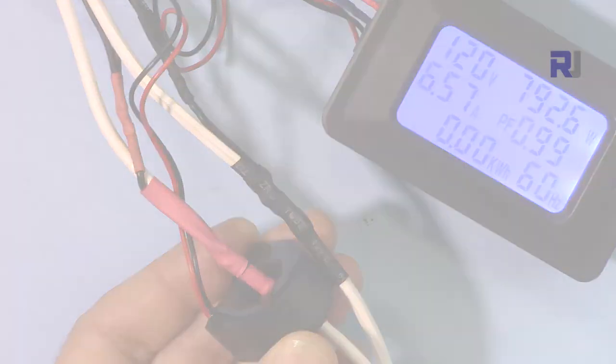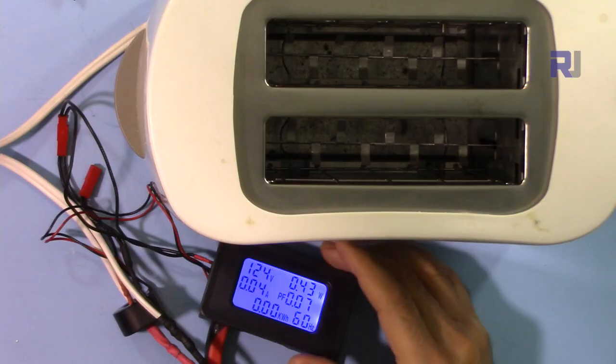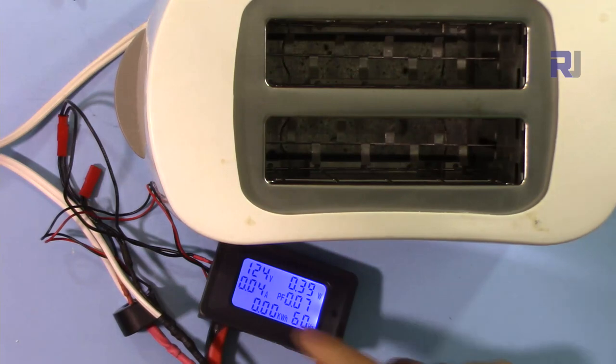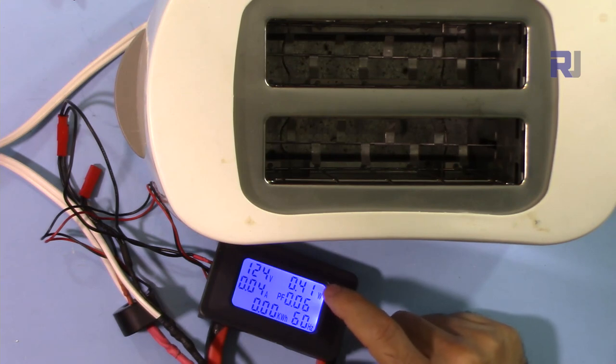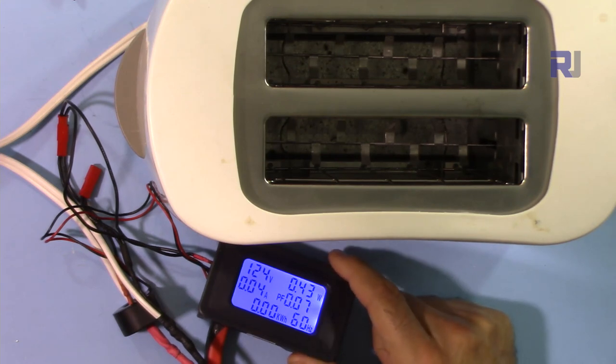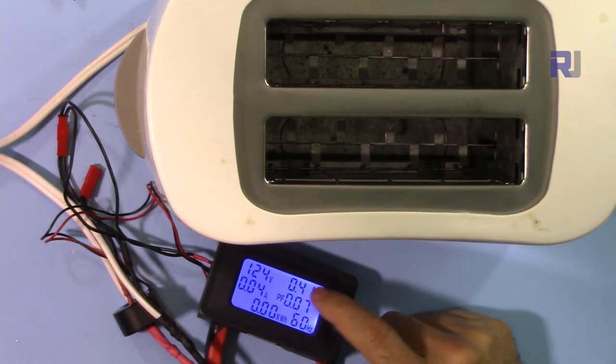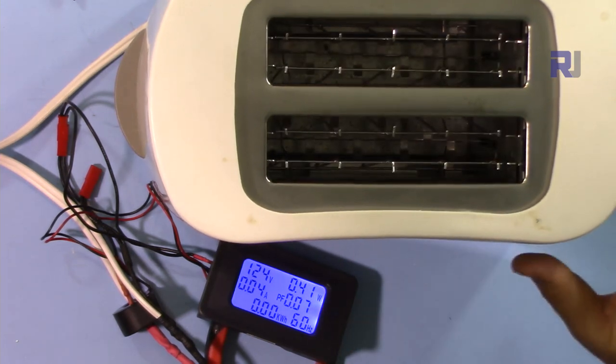It shows also the power and the current. Now the power meter is set up, this is connected but not turned on. As you can see it shows 0.04 ampere and 0.41 watt, and that is the error of this device. Even when the load is not turned on you see that, so keep that in mind.